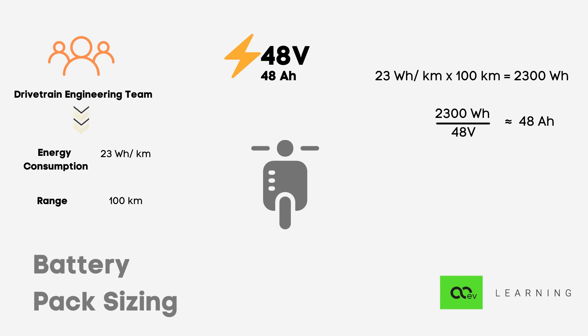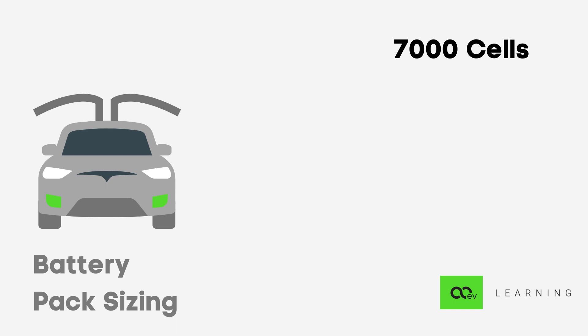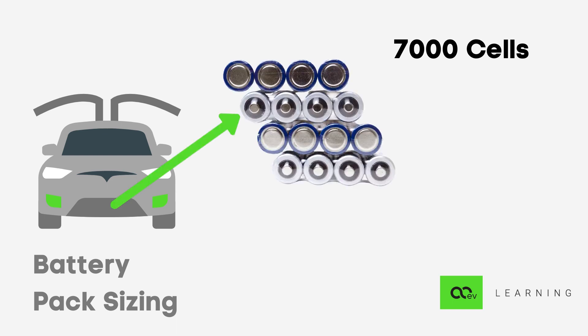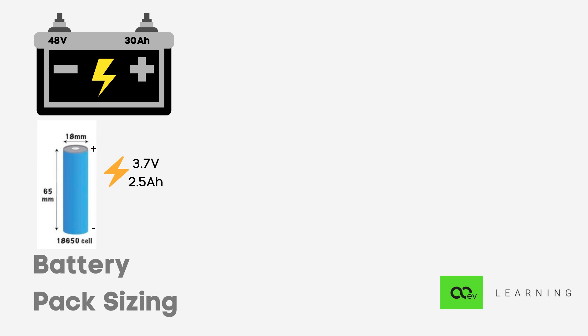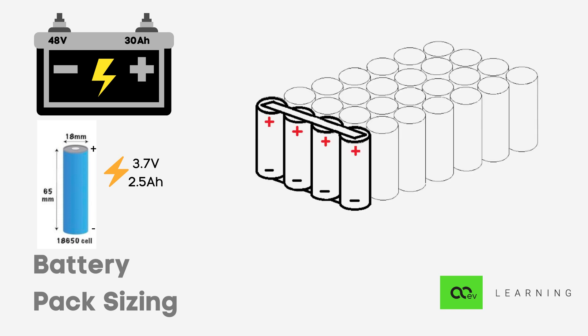Now that we have the battery pack specs, we know this overall pack is made up of a large number of cells arranged in a particular manner. There are almost 7,000 cells in a Tesla vehicle. Let's consider a battery pack of 48 volt 30 Ah. A single 18650 lithium-ion cell has a nominal voltage of 3.7 volt and a capacity of 2500 mAh, which is 2.5 Ah. In general, cells are connected in series and parallel in a battery pack to get the overall performance.